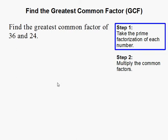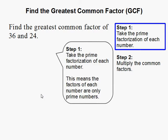Step 1, take the prime factorization of each number. This means the factors of each number are only prime numbers. Prime numbers are numbers that can only be divided by itself and 1.